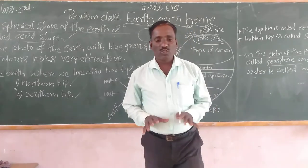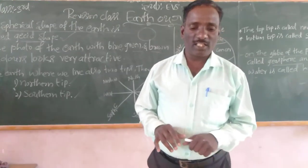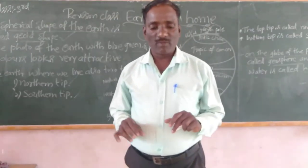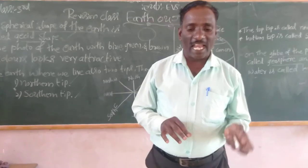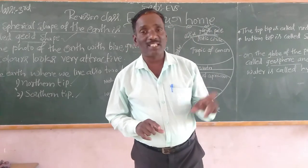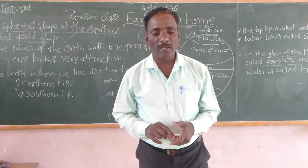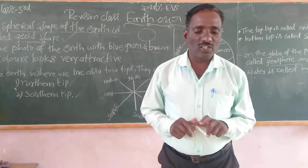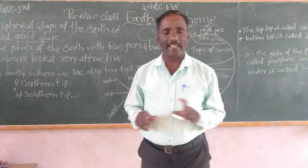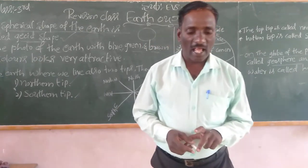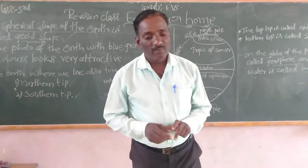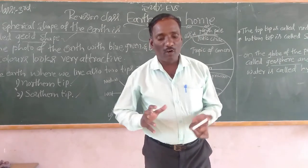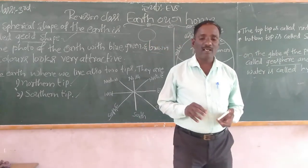Observe the given picture — the lines drawn horizontally on the globe. These are called Latitudes. Major latitudes have specific names — read them with the help of the pictures. Many lines have been drawn vertically on the globe — these lines are called Longitudes. Read the names of important Longitudes given in the picture.